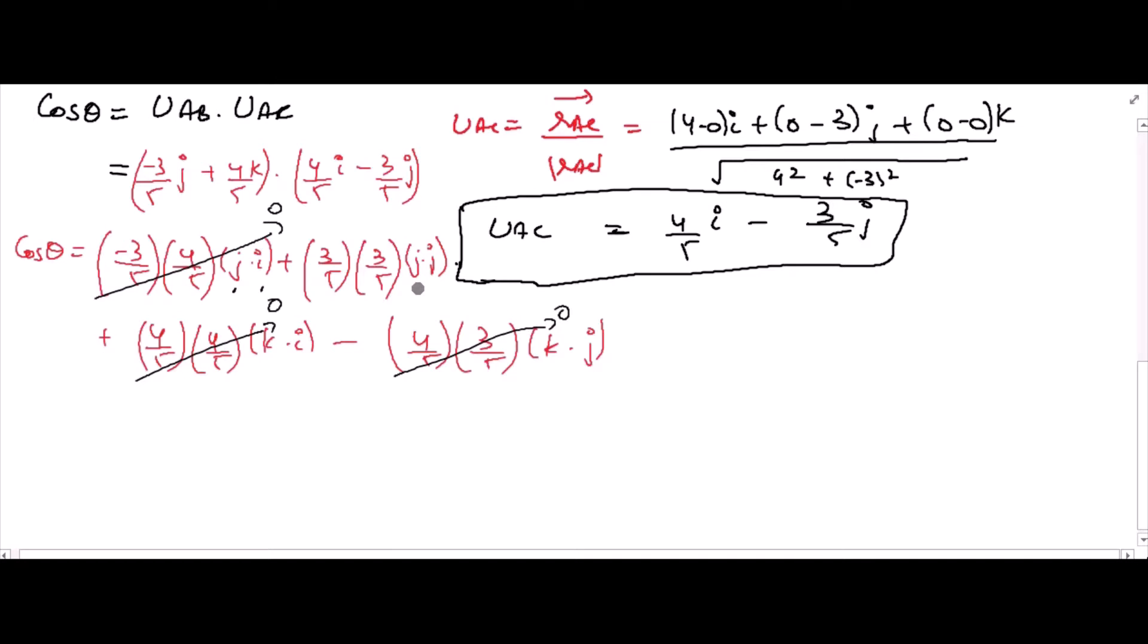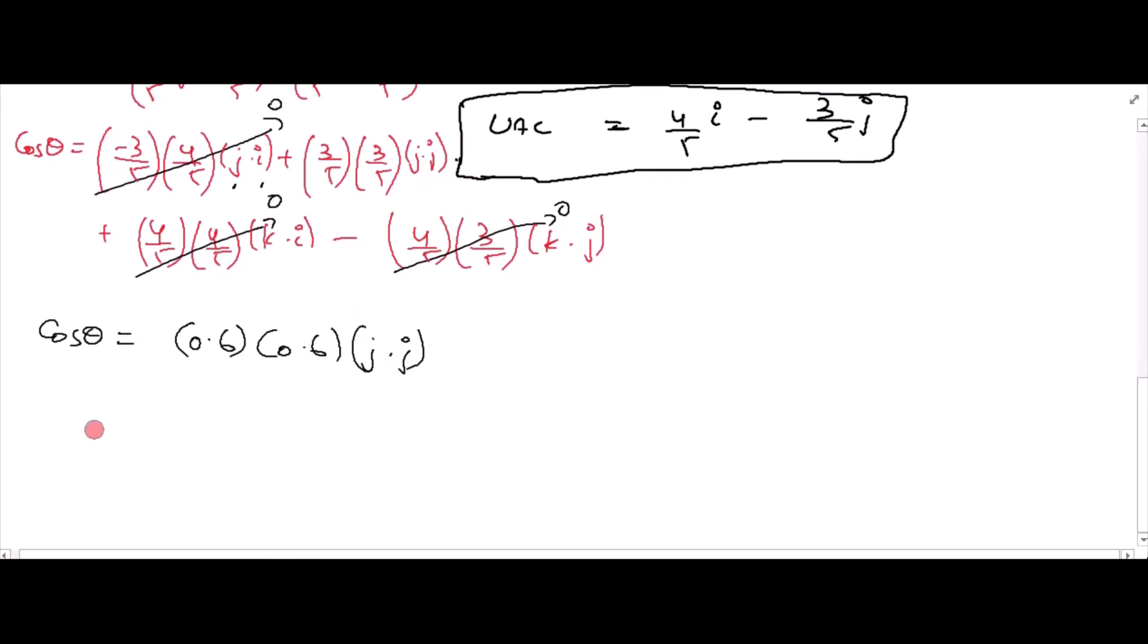Since they are the same components, it means that they are parallel to each other and for the parallel condition, we have theta is equal to 0 degrees and cos 0 is 1. So, we have cos theta is equal to 0.6 into 0.6 j dot j.